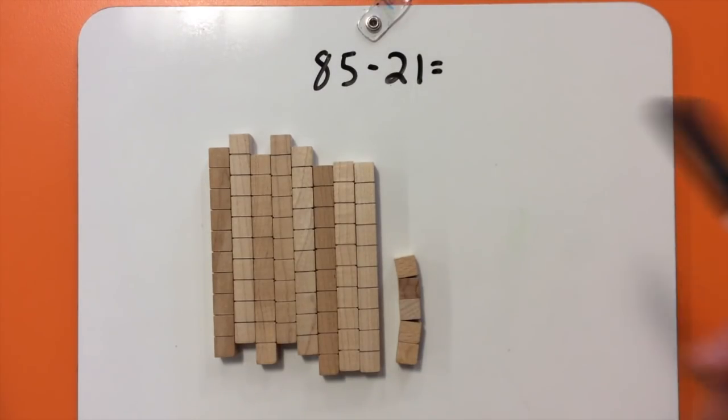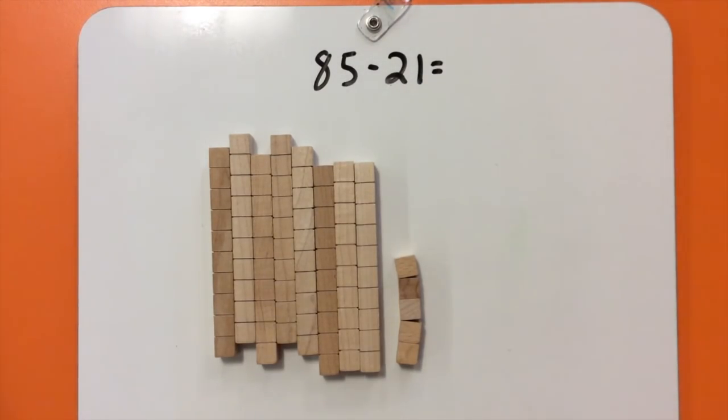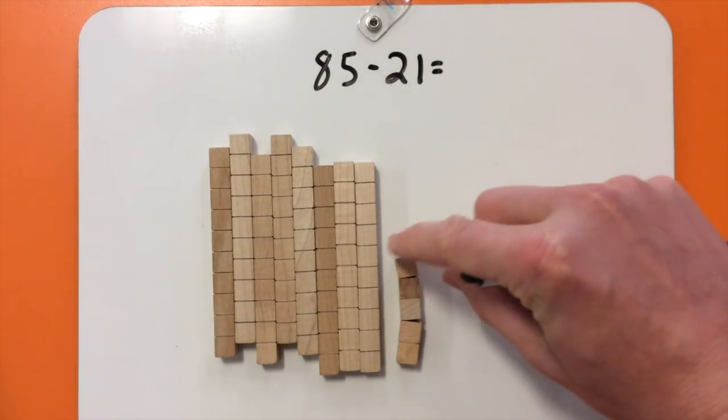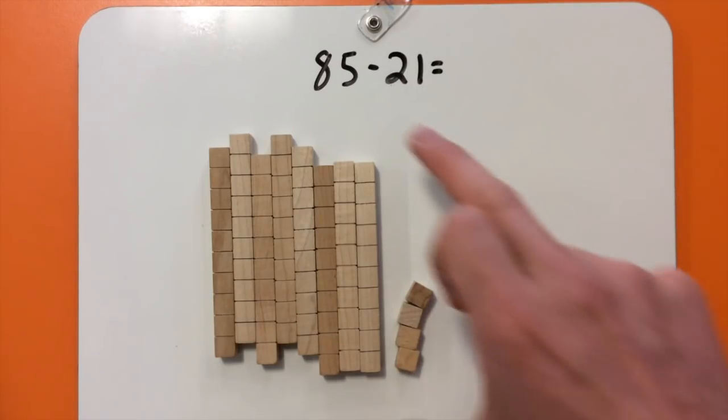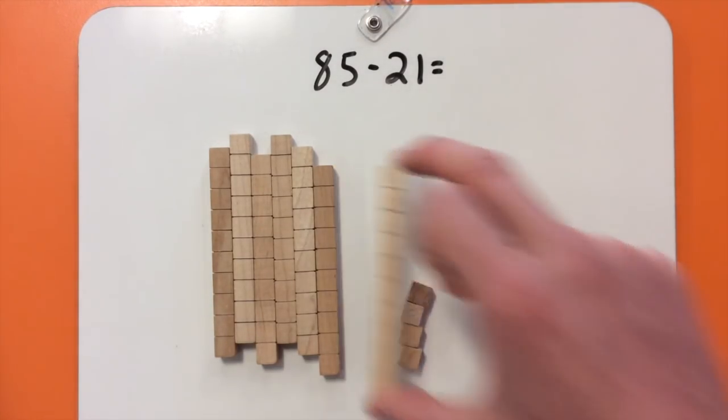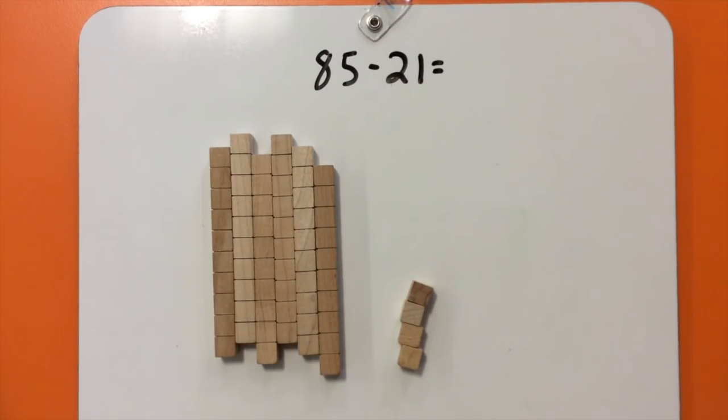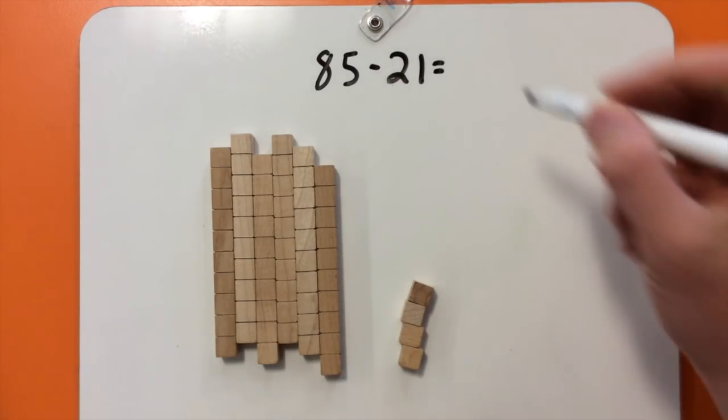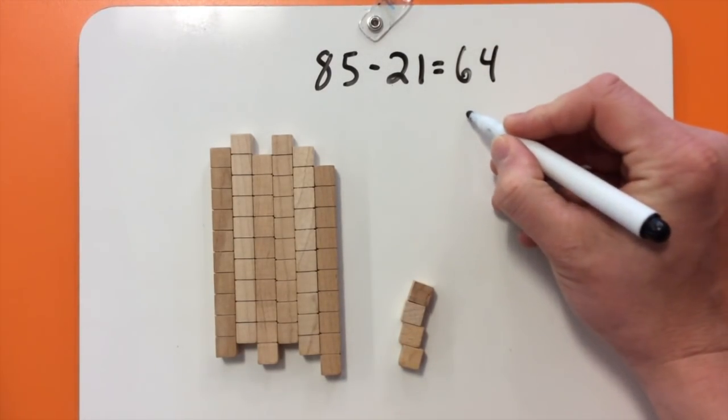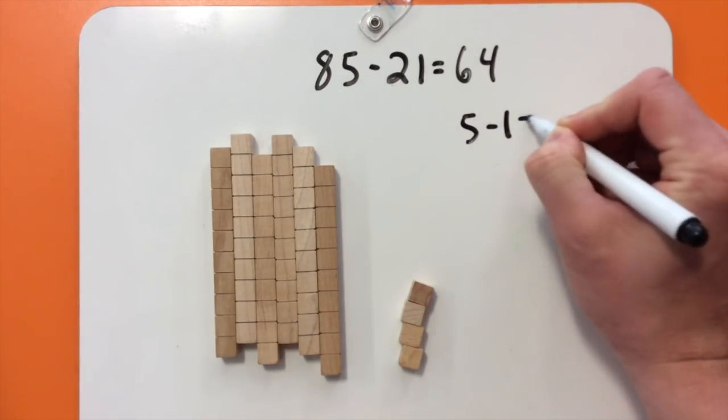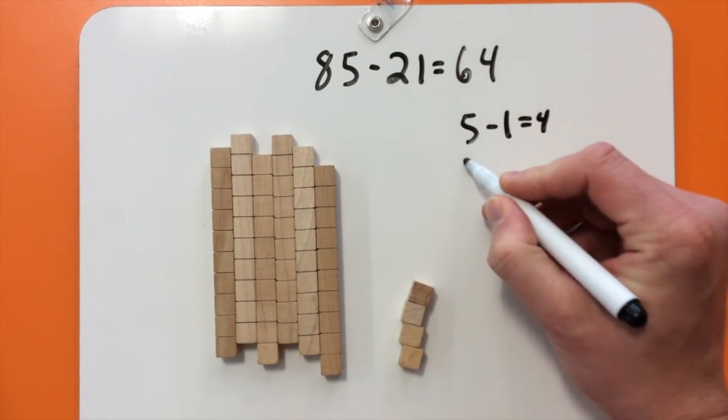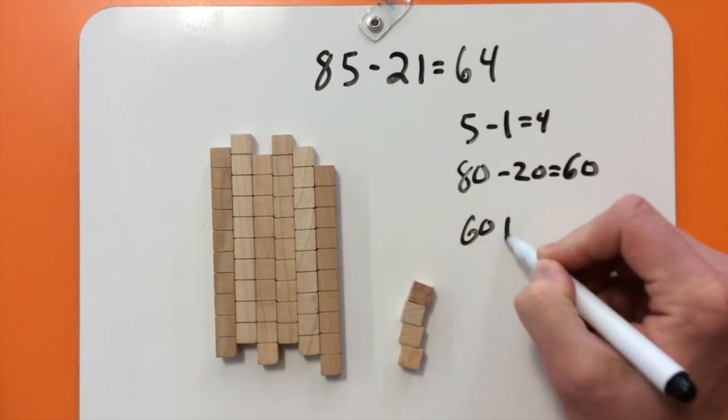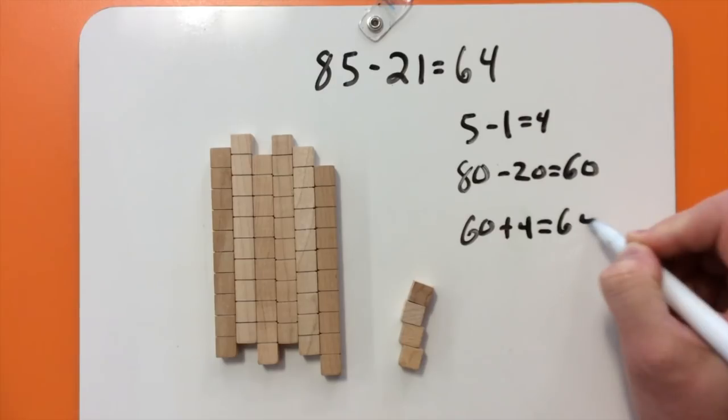So that's 85. I need to take away 21, which means 2 tens and 1 one. So I'm going to take away my ones first. So there's 1, and 2 tens, 10 and 20. And so I have left over 6 tens and 4 ones. So I did 5 take away 1 equals 4. 80 take away 20 equals 60. And 60 plus 4 equals 64.